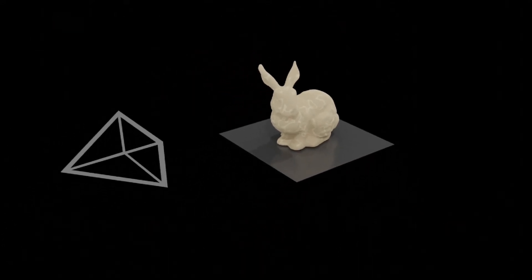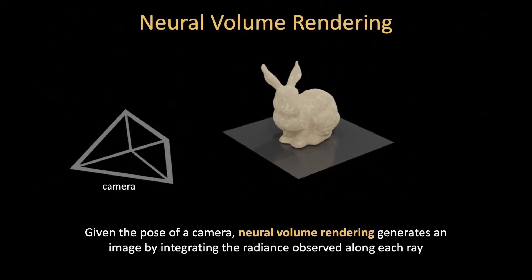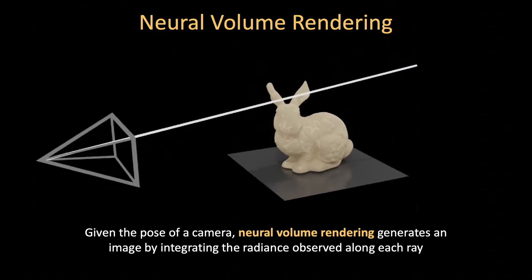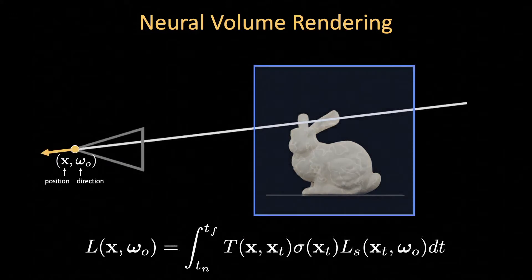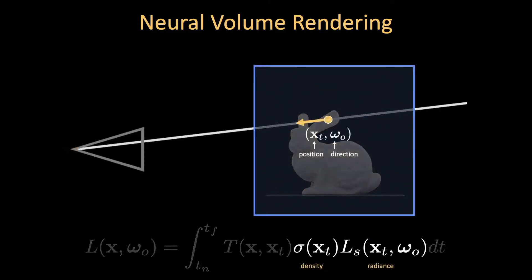Given the pose of a camera, we can use this NERF to generate an image by following a few simple steps. For every pixel in our sensor, we trace a ray through the scene, and evaluate the radiance observed along this ray. This requires integrating the contribution of light from every point on this ray. To do this, we first calculate the light emitted at a point,